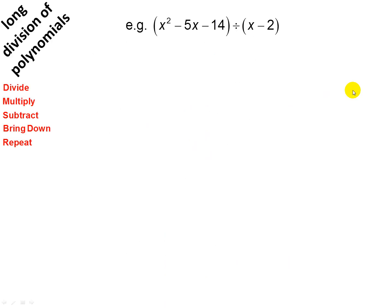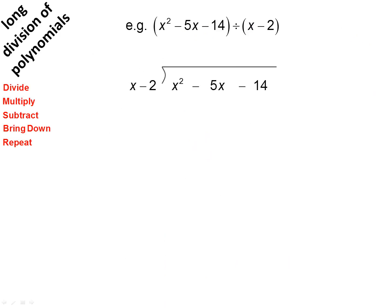So let's have a look at this one. We're dividing x squared minus 5x minus 14 by x minus 2. Let's put it in the long division sign. When we divide polynomials, we make sure they are in the same order — so if this is descending powers, this must be descending powers, otherwise it's going to be one more mix-up.